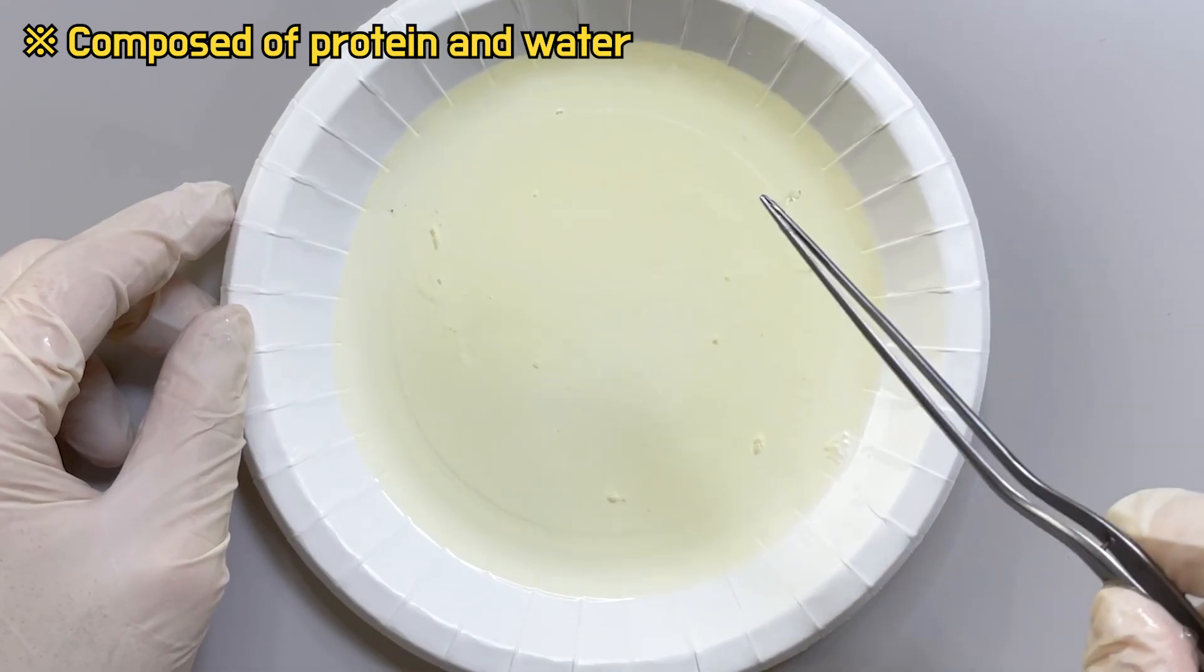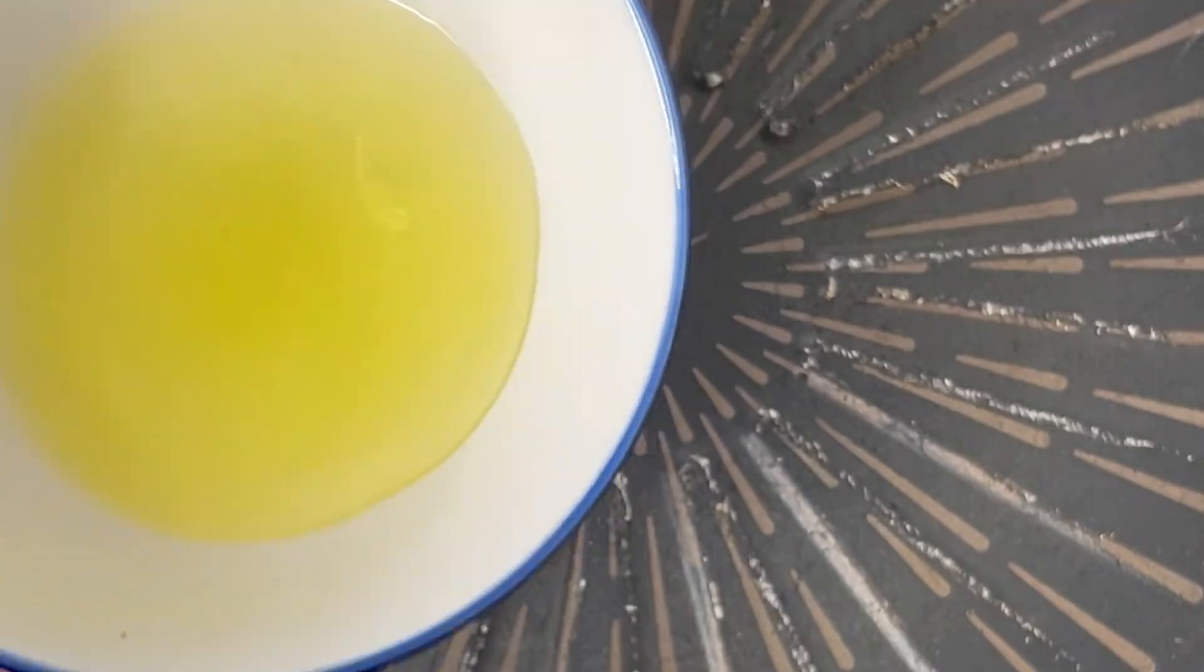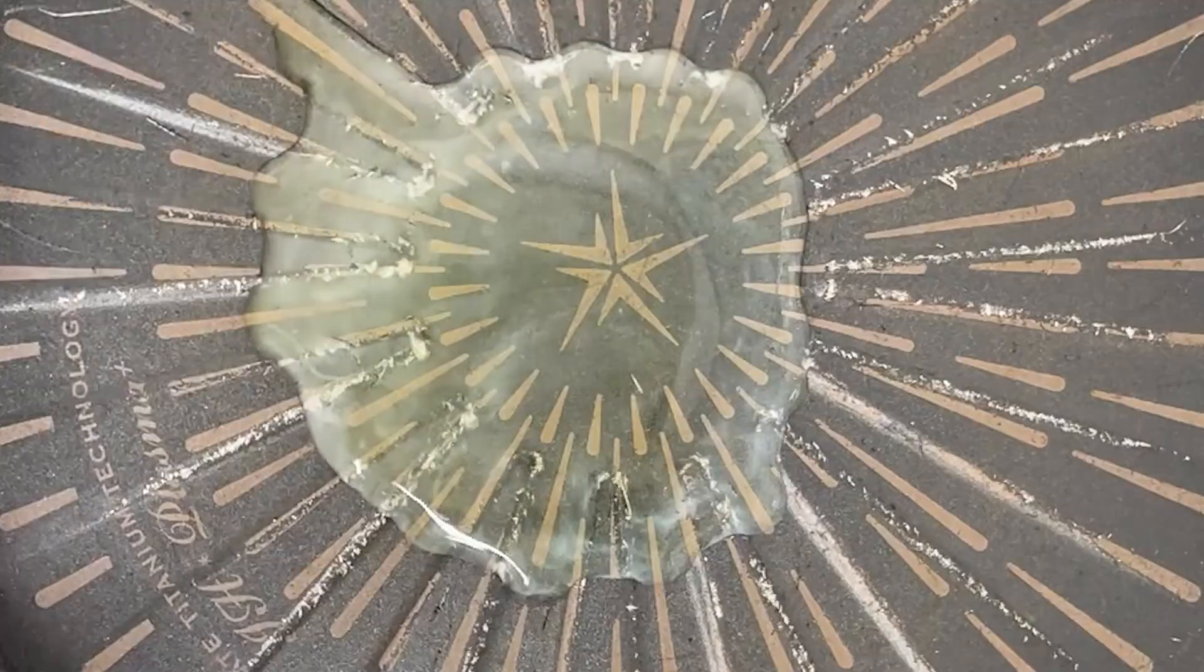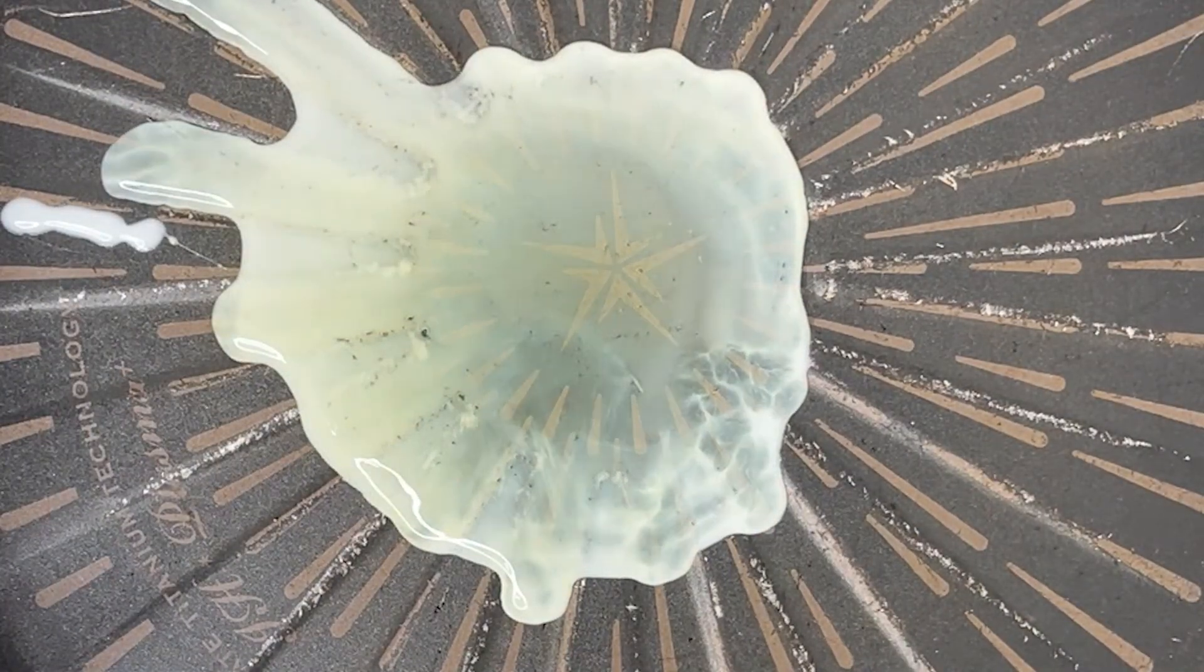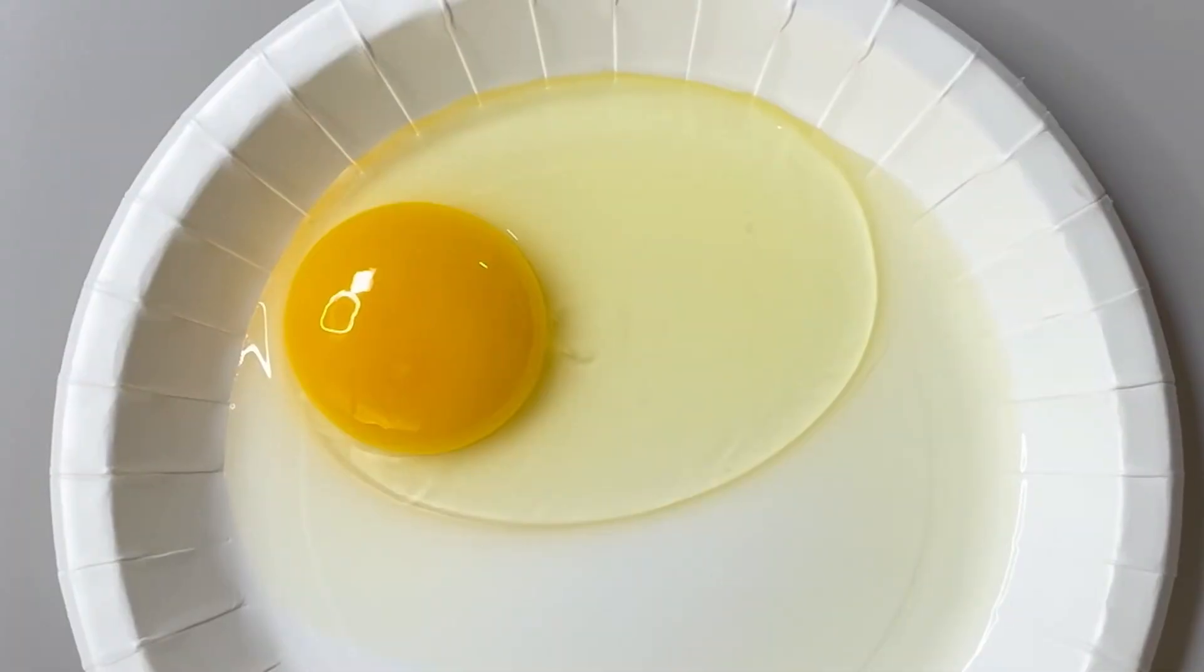On the other hand, the egg white, known as albumin, surrounds the yolk. Albumin is not actually white, but when heat is applied, the proteins coagulate and it turns white. Albumin protects the yolk and maintains the moisture inside the egg.